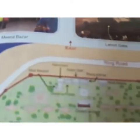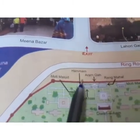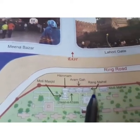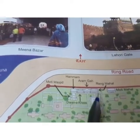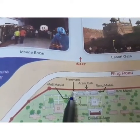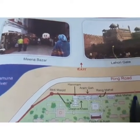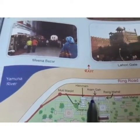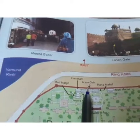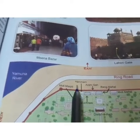On the map the description is quite small but we can see: this is Hamama, this is Moti Masjid, and this is Rang Mahal. To the left of Rang Mahal there are three buildings — Aram Kaha, Hamama, and Moti Masjid. Aram Kaha is where the princely families used to take rest. There is also Moti Mahal and Moti Masjid — these are two different things.